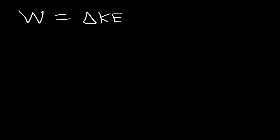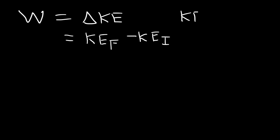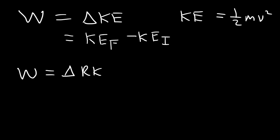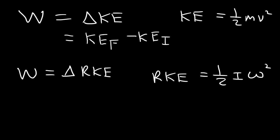There are other ways to calculate the work. Work is equal to the change in kinetic energy — that is, the final kinetic energy minus the initial kinetic energy. This is translational kinetic energy, which is 1/2 mv squared. Work is also equal to the change in rotational kinetic energy — the final minus the initial. Rotational kinetic energy is 1/2 times inertia times omega squared, where omega is the angular speed, which is the rotational equivalent of linear speed.